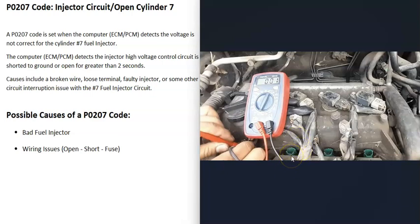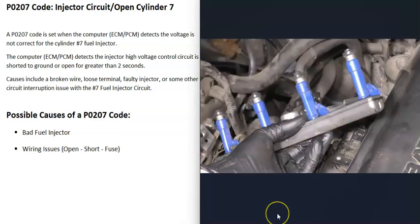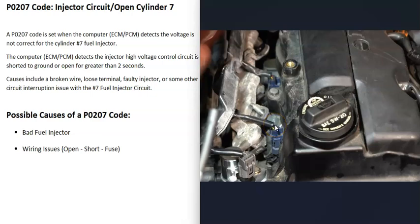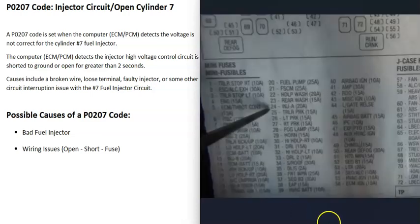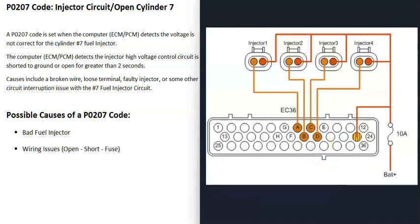For example, if you know cylinder number 6 is working correctly, you could check the ohms on that fuel injector and then see if they match on cylinder number 7, because the first thing that could cause this is a bad fuel injector. The next thing is the wiring going to the fuel injector — if there's an open, a short, or a blown fuse, that's going to cause problems. So check the fuses and be sure they're all good with no issues on any fuel injector related fuses.